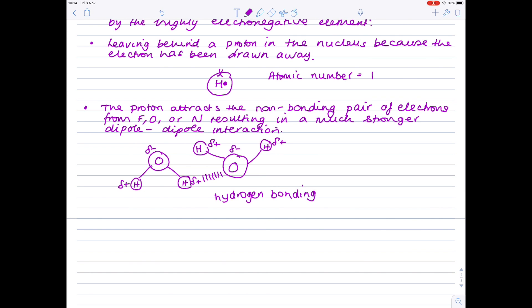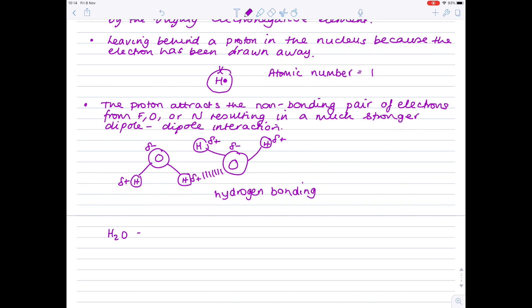This hydrogen bonding explains why water's boiling point is so much higher than other molecules. Water's boiling point is 100 degrees Celsius. If we take methane, CH4, it has a boiling point of minus 162 degrees Celsius. The reason water is a liquid at room temperature whereas methane is a gas is due to the fact that hydrogen bonding in water is much stronger than the London forces found in methane — and I'll talk about London forces in the next video.